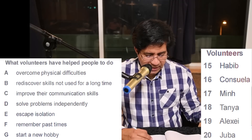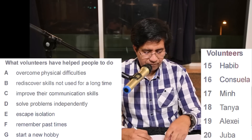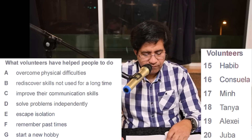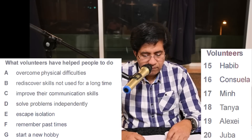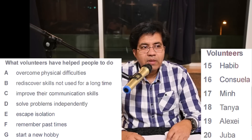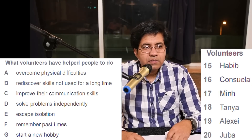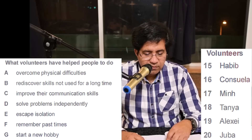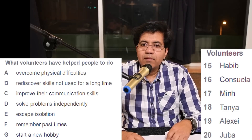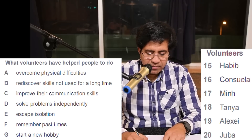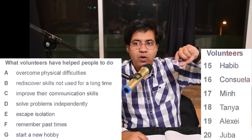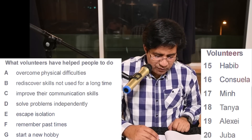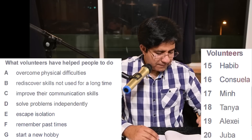Alexi is a volunteer with a family that faces a number of difficulties. By calmly talking over possible solutions with family members, he's helping them realize they aren't helpless and can do something themselves to improve their situation. This has been great for their self-esteem. 'Difficulties' for problems, 'themselves' for independently — so the answer is D: solve problems independently, for question 19.